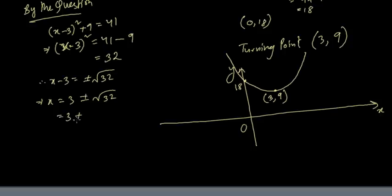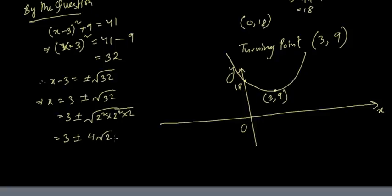Simplifying √32: 32 = 2² × 8 = 2² × 2 × 4 = 16 × 2, so √32 = 4√2. Therefore x = 3 ± 4√2. The x-coordinates where the line meets the curve are 3 + 4√2 and 3 - 4√2.